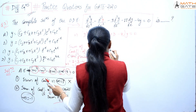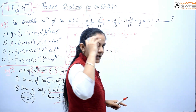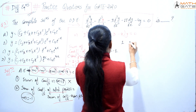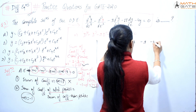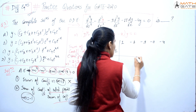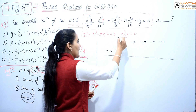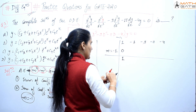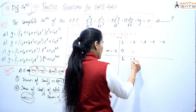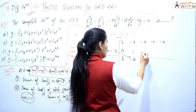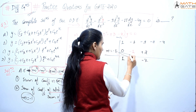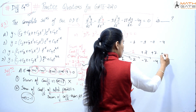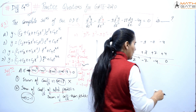Now let's perform synthetic division with m equals minus 1. Write down the coefficients: 1, minus 1, minus 9, minus 11, minus 4. Performing synthetic division: bring down 1; 1 times minus 1 gives minus 1; minus 1 plus minus 1 is minus 2; continuing gives minus 7; then minus 7 times minus 1 gives 7; minus 11 plus 7 is minus 4; minus 4 times minus 1 is 4; minus 4 plus 4 is 0. Remainder is zero, confirming m equals minus 1 is a root.